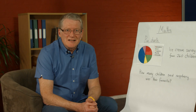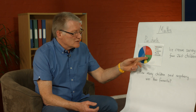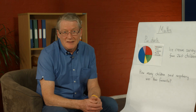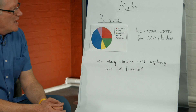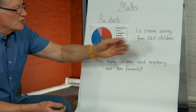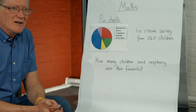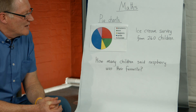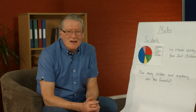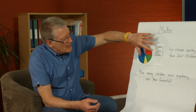Data is often represented in pie charts, and being able to find angles and relate those angles back to the data is an important mathematical skill in the 11 plus. Here we've got a pie chart showing the results of a survey of 240 children and their responses about which ice cream flavor they like the best. Our question is: how many children said raspberry was their favorite flavor?